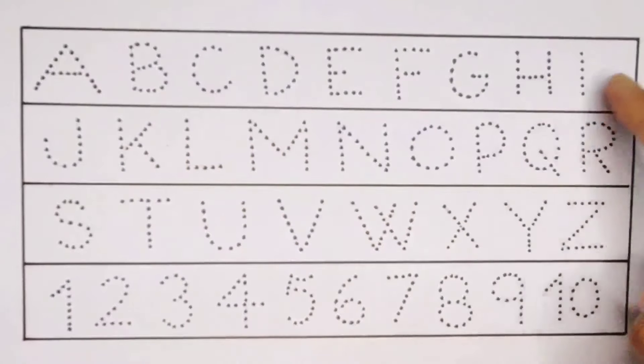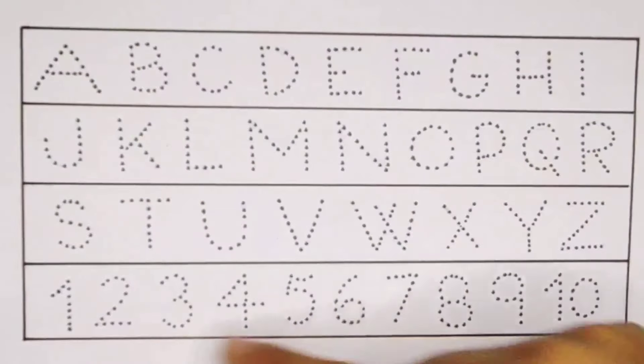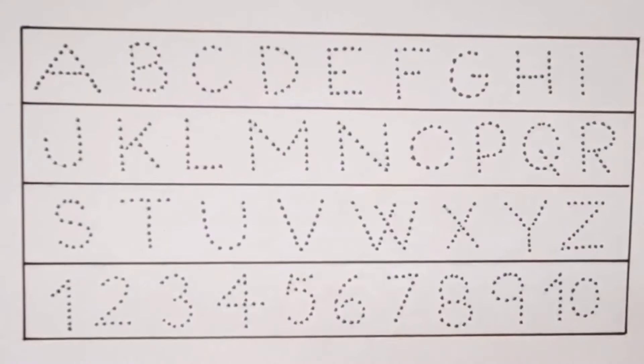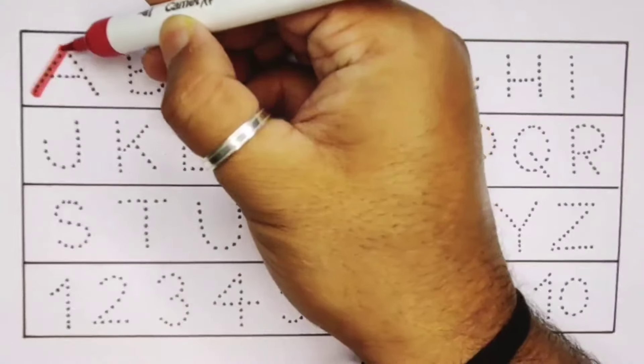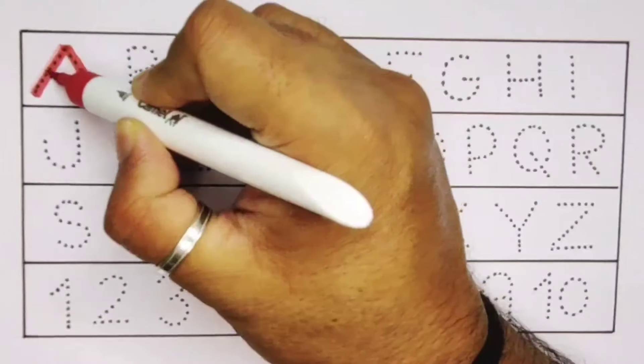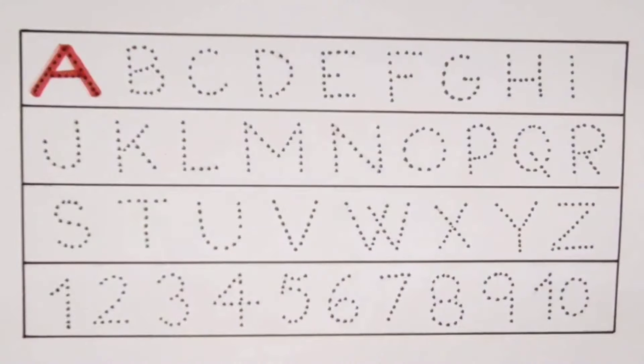First, A. A for aeroplane. A for aeroplane. Next, B. B for butterfly. B for butterfly.